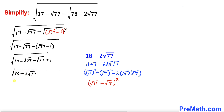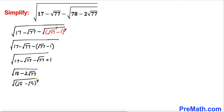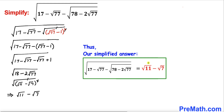So this radicand has been simplified to square root of 11 minus square root of 7, whole squared. The square and square root undo each other, and we simply end up with square root of 11 minus square root of 7. That's our answer — our simplified expression is square root of 11 minus square root of 7.